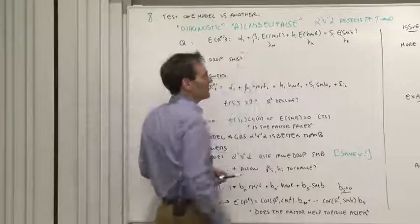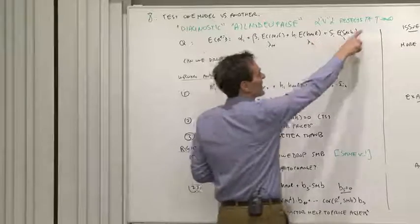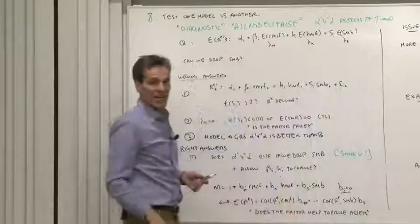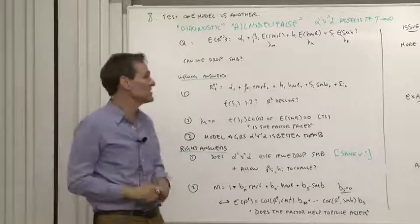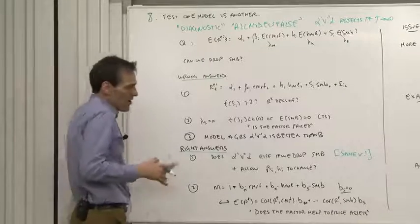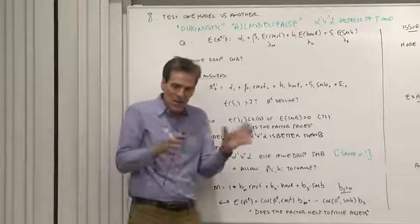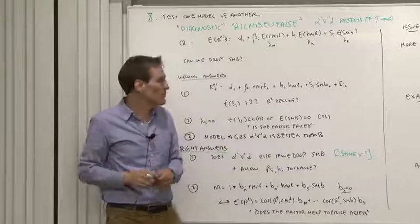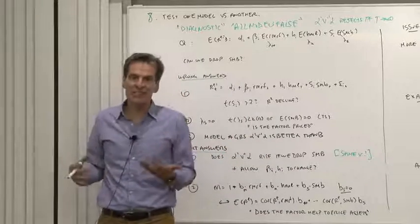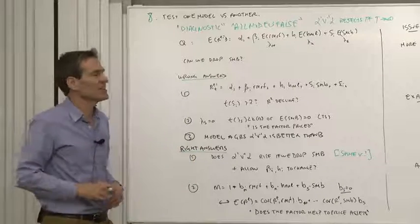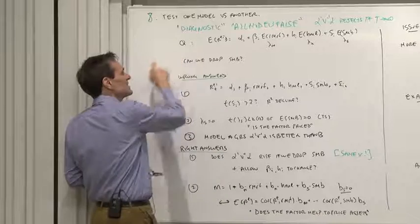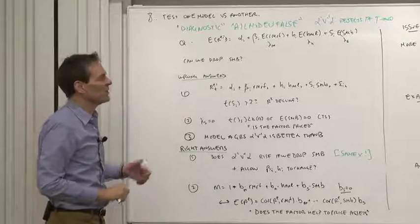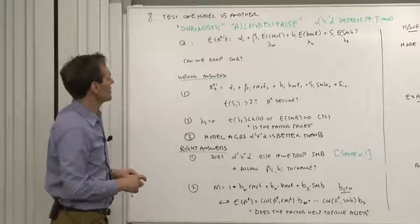We know all our models are false. We know that if we had enough data, any model would be rejected. It's simply a matter of getting the standard errors low enough so that we can measure the alphas that are there. So what we often want to do is see in the data which model is better than some other model. But we want to use statistical inference to see if there's statistical evidence for one model versus another model. So how do we do that test? Let me show you an example of how you can think about that question.